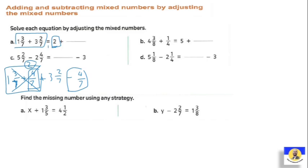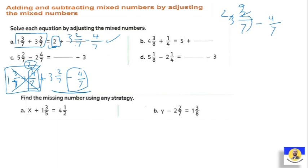One and three over seven plus four over seven equals two. So we ask: what plus four over seven gives two? Try to do minus four over seven or find the additional number. So one and three over seven plus four over seven equals two. Now for the remaining expression, we can write it as plus three and two over seven minus four over seven, which equals two and five over seven.